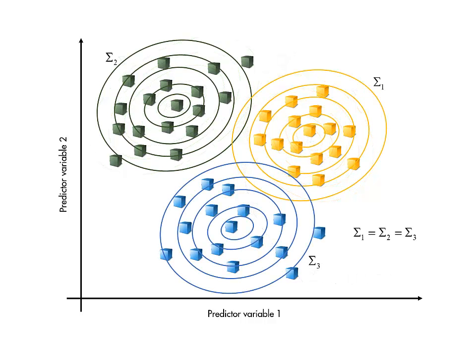If we assume that the distributions all have the same shape, that is, the same covariance matrices, then the formula simplifies greatly. The boundaries turn out to be linear. And the coefficients of these linear boundaries are easily calculated from the individual class means and shared covariance matrix of the observations. This makes linear discriminant analysis quick and easy to perform.